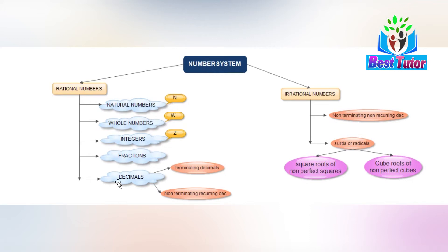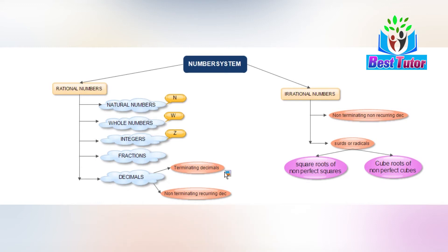Coming to decimals, they are classified into three categories: terminating decimals, non-terminating recurring decimals, and non-terminating non-recurring decimals. Out of these three categories, terminating decimals and non-terminating recurring decimals belong to rational numbers. Every terminating decimal can be expressed in the form of a fraction where both numerator and denominator are integers and the denominator is never equal to 0.